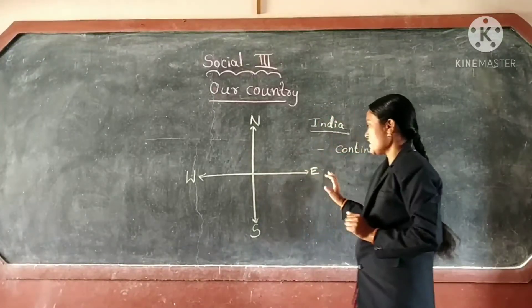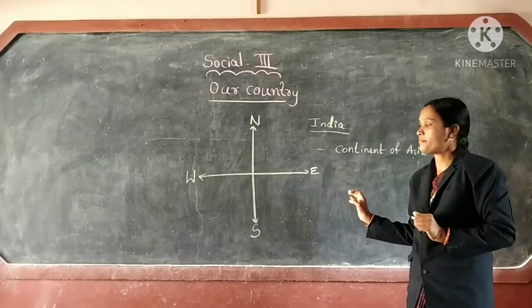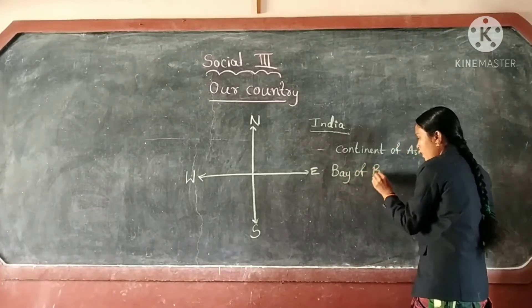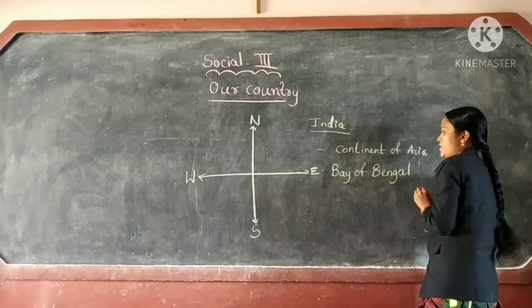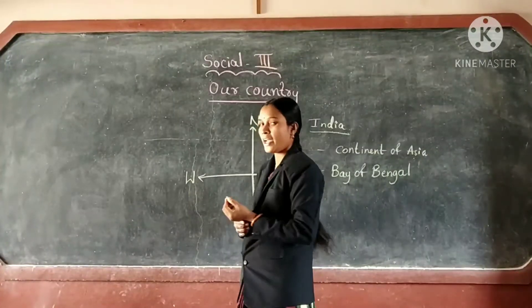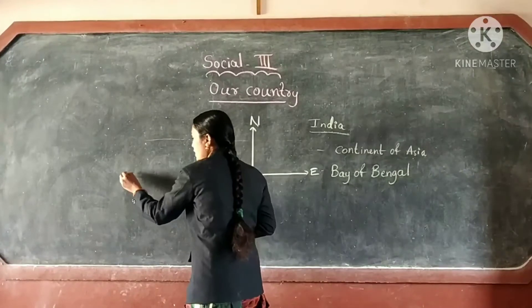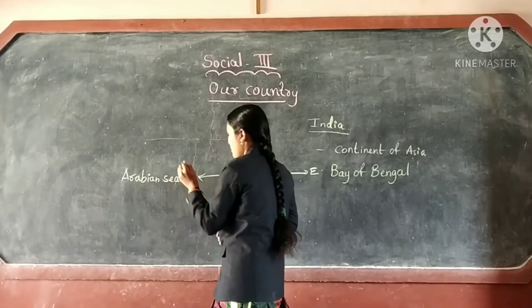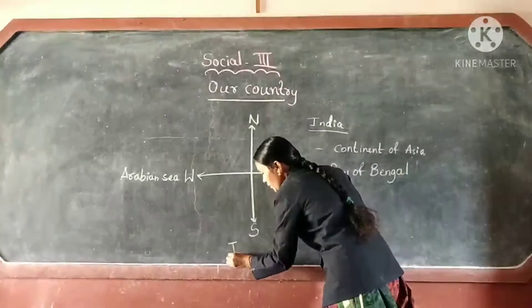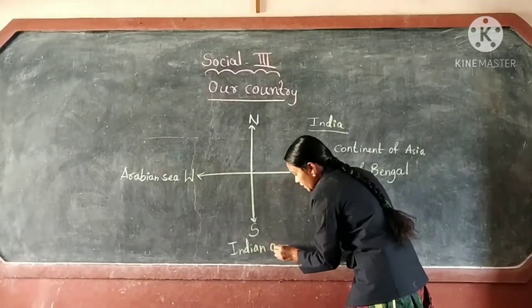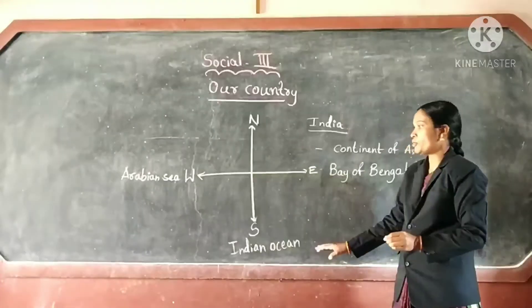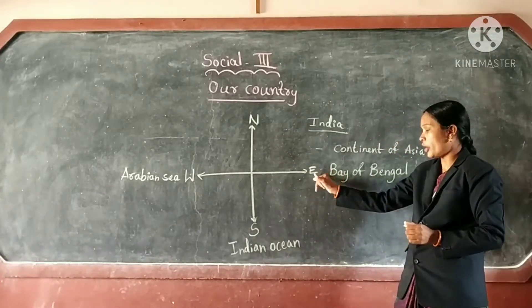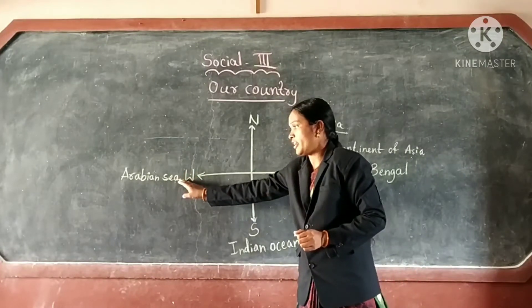India is surrounded by seas on three sides. Bay of Bengal on the east, Arabian Sea on the west, and Indian Ocean on the south.